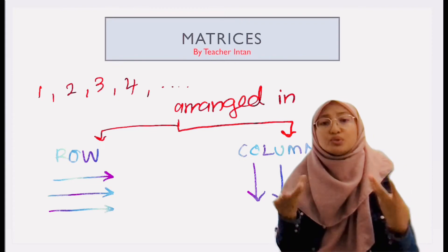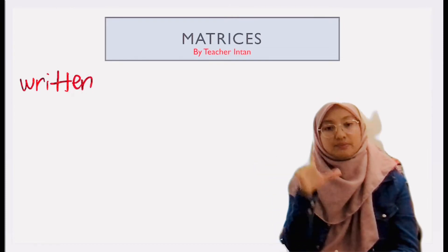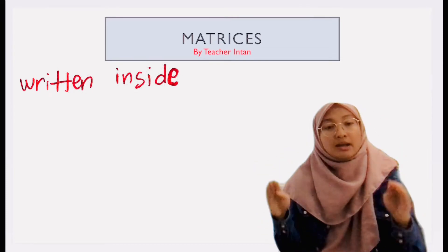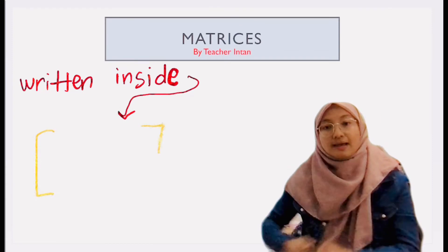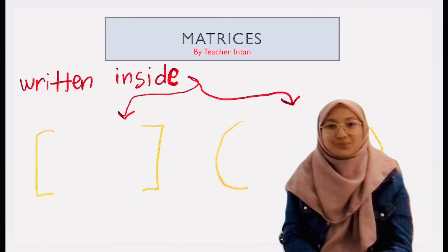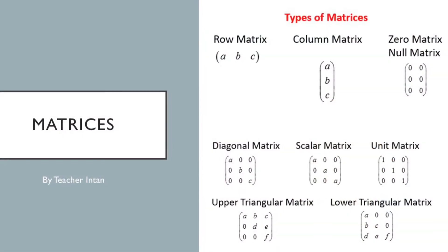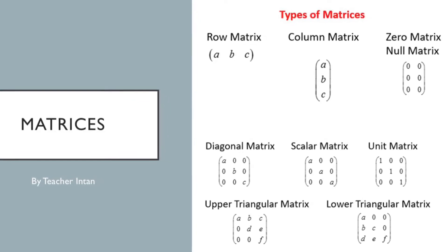So how do we write the numbers for matrix? The set of numbers is written inside a bracket. You can use two types of brackets like this one or also this one. You can choose which one you like. So here are examples for types of matrices and you can have a look.